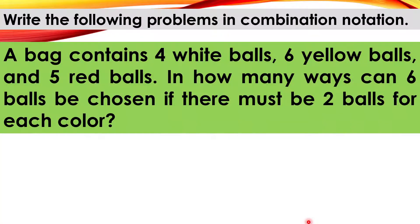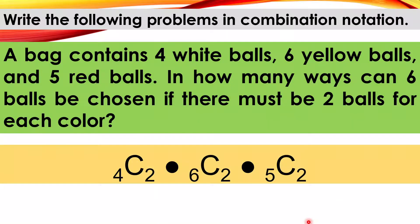A bag contains white balls, 6 yellow balls, and 5 red balls. In how many ways can 6 balls be chosen if there must be 2 balls for each color? Here is the answer.